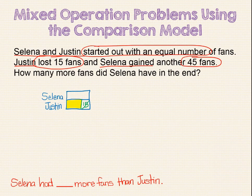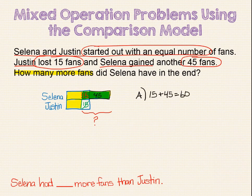Next, we are told that Selina gained another 45 fans, so we can add on to her bar to represent an addition of 45 more fans. The yellow portion represents her remaining fans. Since the problem asks us how many more fans Selina has, we need to find out how many fans are in this section. Looking at our bar model, we know this small piece is 15, because that is equal to Justin's piece which represents his lost fans. Selina did not lose any fans. You can probably see that we need to add 15 plus 45 to find that Selina has 60 more fans than Justin.